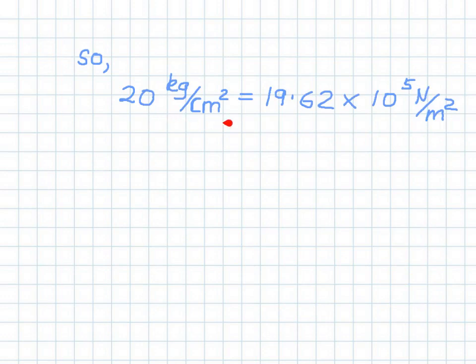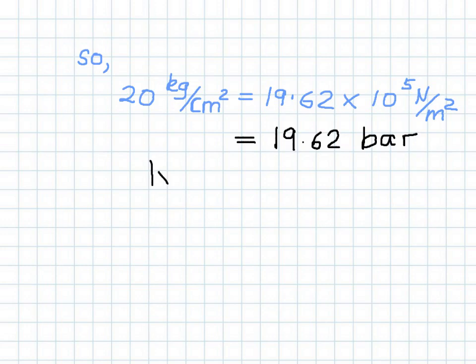So 20 kilograms per cm squared is equal to 19.6 times 10 to the power of 5 Newton per meter squared. Remember the conversion: 1 times 10 to the power of 5 Newton per meter squared is equal to 1 bar. Therefore, 19.6 times 10 to the power of 5 Newton per meter squared equals 19.6 bar. As an approximation, we usually say 20 kilograms per cm squared is approximately 20 bar.